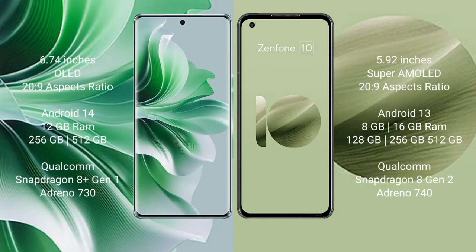Oppo Reno 11 Pro comes with a 6.74-inch OLED display and a 20:9 aspect ratio. Oppo Reno 11 Pro runs on the Android 14 operating system. Asus Zenfone 10 runs on the Android 13 operating system. Oppo Reno 11 Pro comes with 12GB RAM.